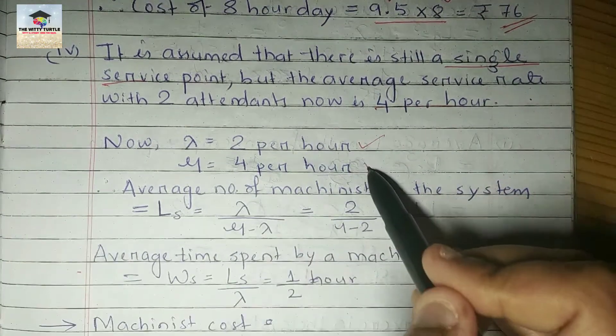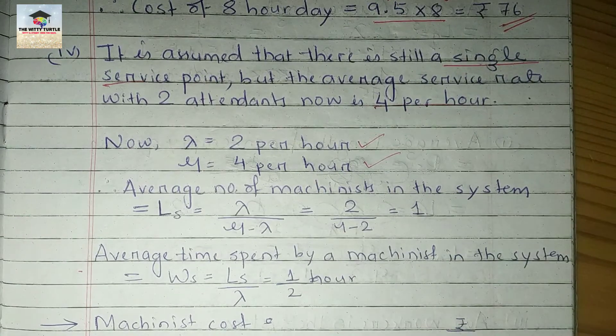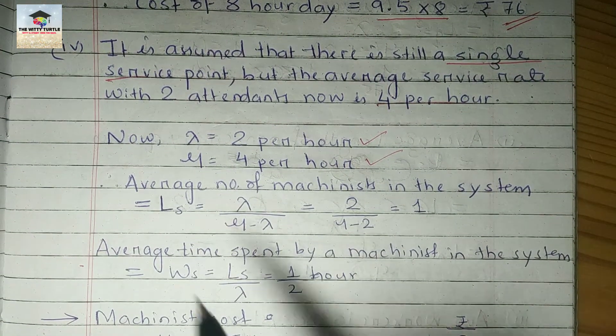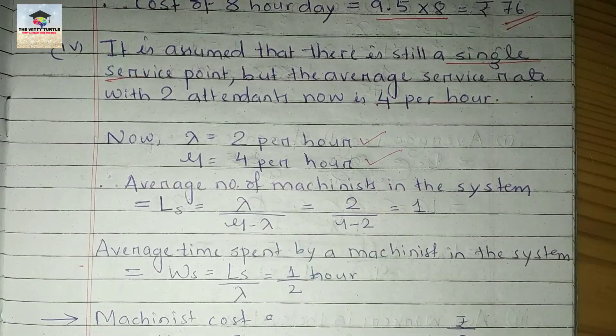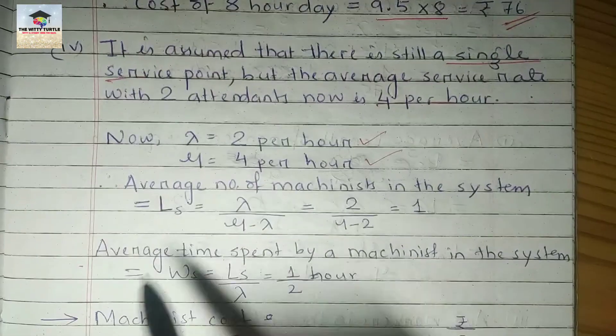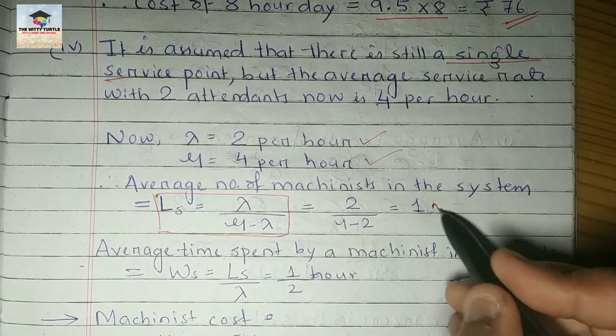So here your lambda will be 2 per hour and your mu will be 4 per hour. The first thing you need to calculate is the average number of machinists in the system, your Ls. We know the formula of Ls, you can easily calculate this by now.